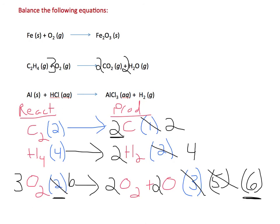And so our final answer would be just C2H4 plus 3O2 gives us 2CO2 plus 2H2O. Thank you.